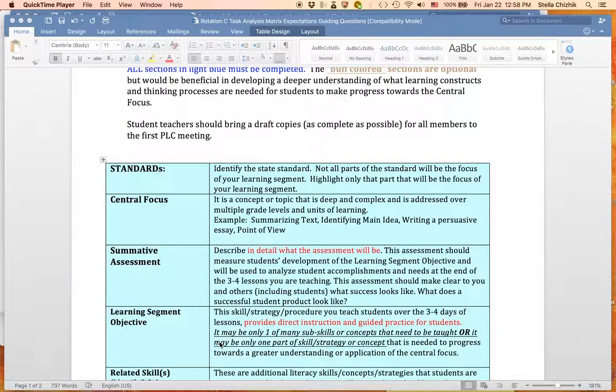And at that time, the university liaison should be working with you and the other PLC members to help fill in this. This is meant to be an instructional matrix. We want you to learn how to plan a learning segment so that you can best figure out how to create three to five lessons that are coherent and that are building, that build on top of each other.